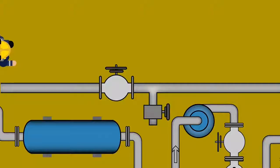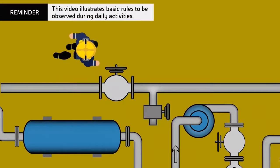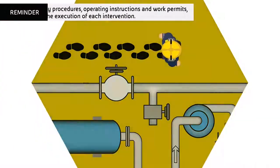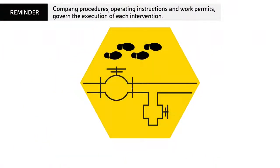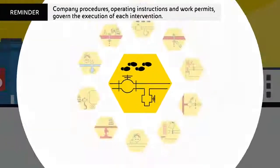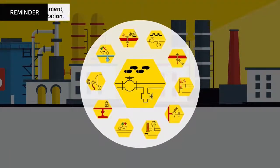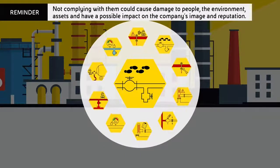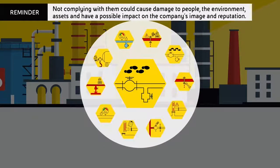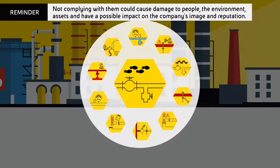Reminder. This video illustrates basic rules to be observed during daily activities. Company procedures, operating instructions and work permits govern the execution of each intervention. Not complying with them could cause damage to people, the environment, assets, and have a possible impact on the company's image and reputation.